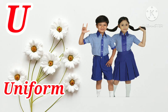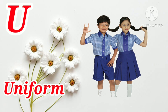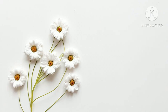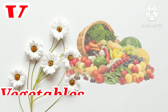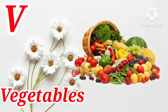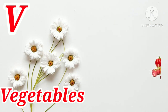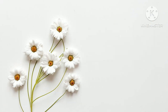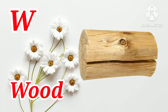U is for Uniform. U N I F O R M. Uniform. V is for Vegetables. V E G E T A B L E S. Vegetables. W is for Wood. W O O D. Wood.